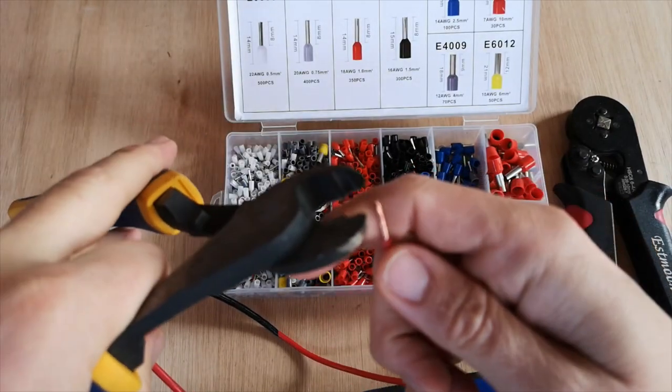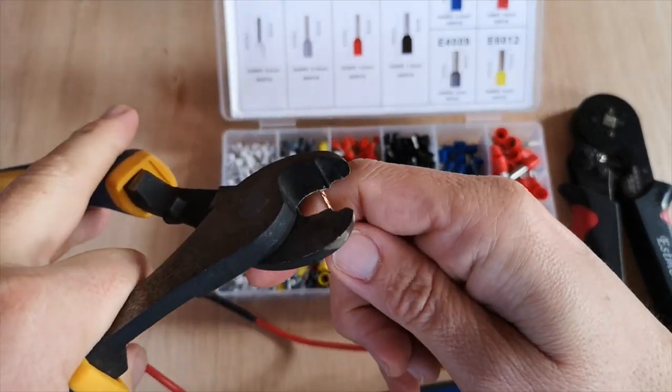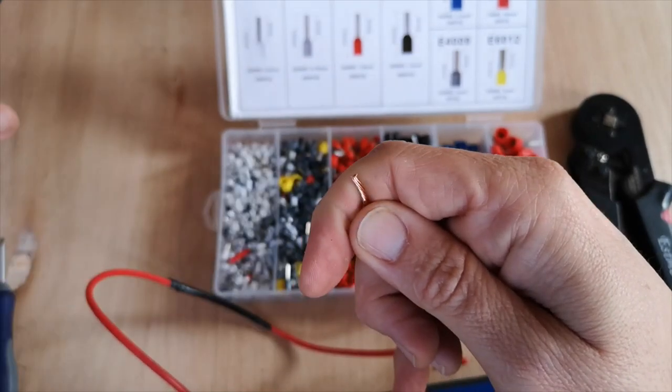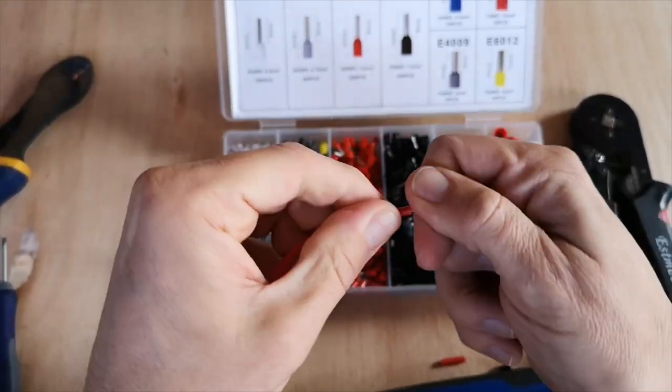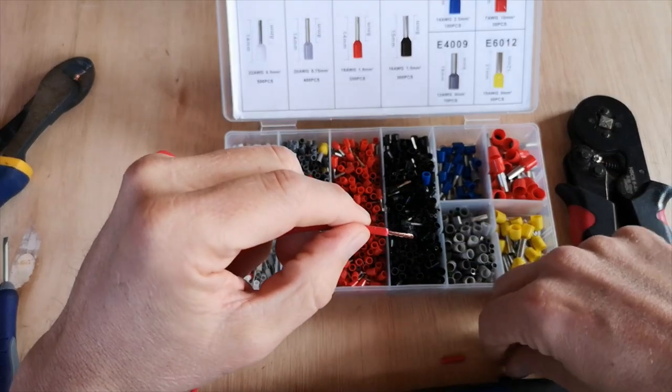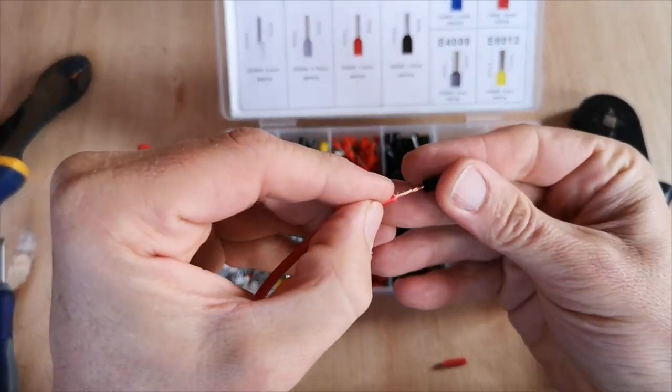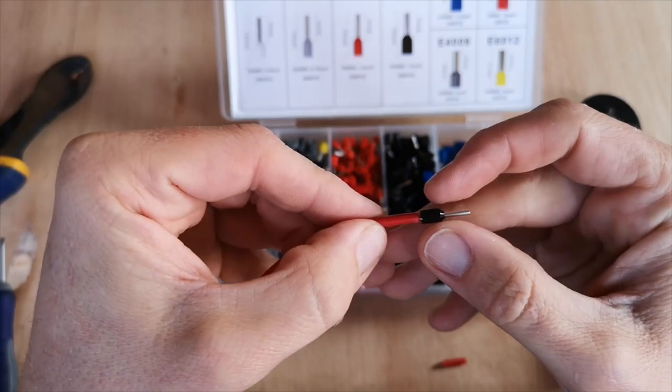So we shall trim off a few millimeters of the cable strands there. Twist and reapply our ferrule, and that should see us with all the cables within the ferrule and none from the end.